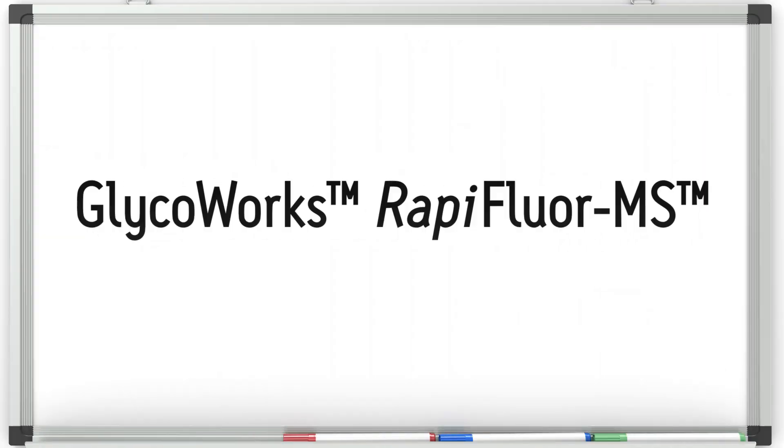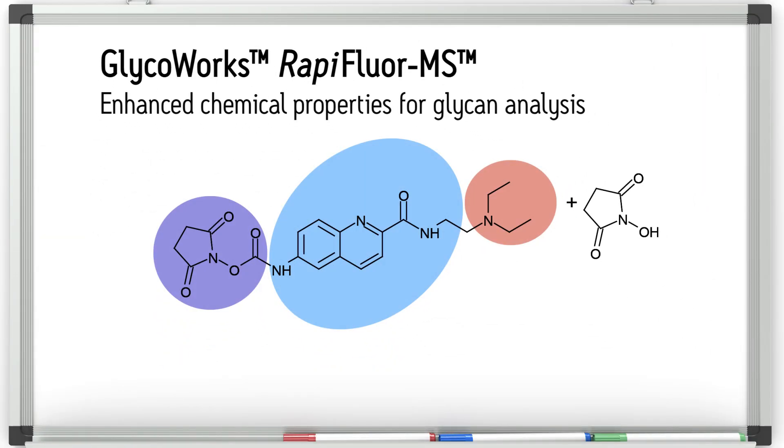There are three components that are key to the success of the RapiFluor MS reagent: a rapidly reacting succinamidal carbamate, a highly fluorescent quinolin chromophore, and an MS-active tertiary amine.